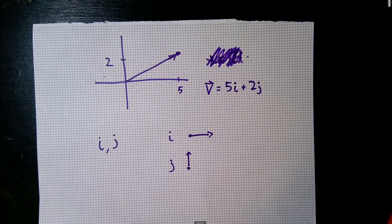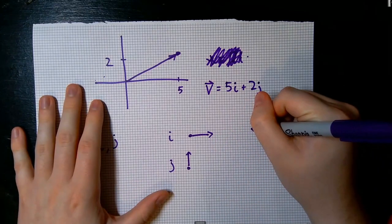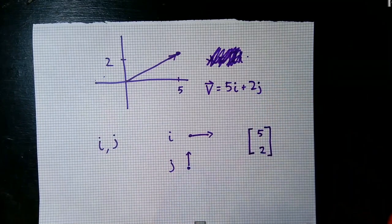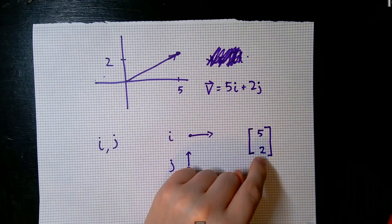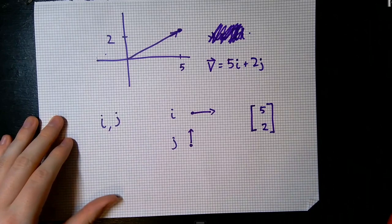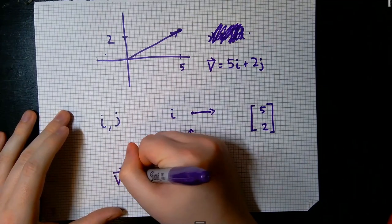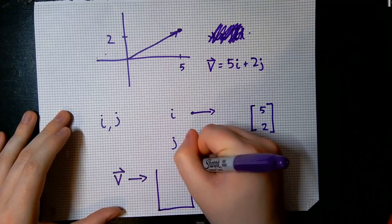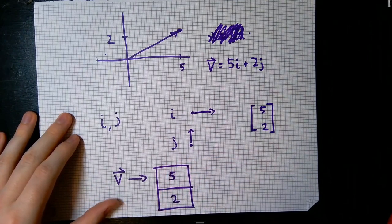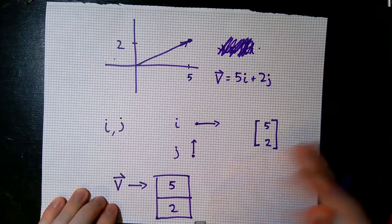Another way we can represent this vector calls back to the linear algebra approach where we use a column matrix with 5 and 2, where 5 represents the horizontal magnitude and 2 the vertical magnitude. So if we want to represent a vector using MATLAB, we can use our idea of arrays — shoving the horizontal magnitude in one box and the vertical magnitude in the other box. Using arrays for this purpose is actually going to really help us when we start talking about vectors and column matrices like this.